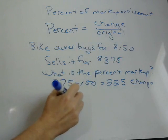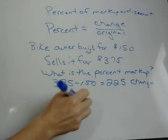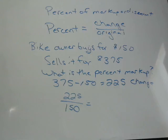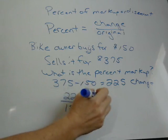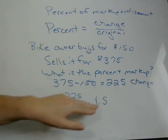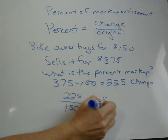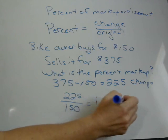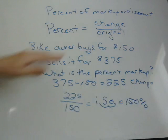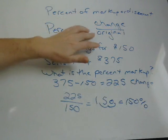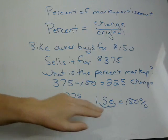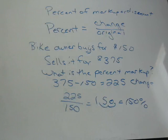So the percent is going to be 225 divided by 150. If you plug that into your calculator, you're going to get 1.5. Now remember, this is a decimal and you're looking for a percent, so you need to change this to a percentage. The way you do that is move the decimal point over two spots, and you get 150%. So it's the change in the price over the original price — plug that into your calculator, get a decimal, then change it to a percent.